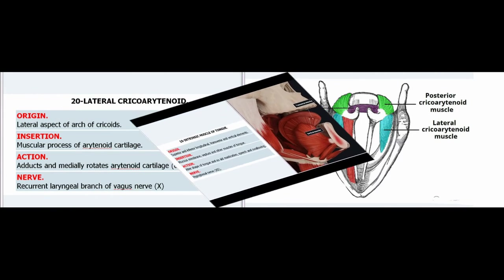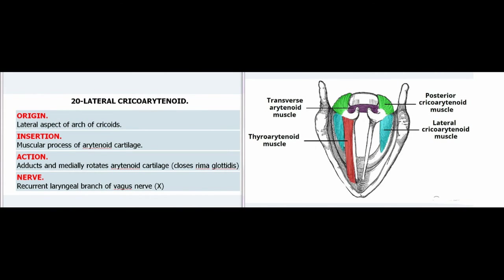20. Lateral Cricoarytenoid. Origin: Lateral aspect of arch of cricoid cartilage. Insertion: Muscular process of arytenoid cartilage. Action: Adducts and medially rotates arytenoid cartilage, closes rima glottidis. Nerve: Recurrent laryngeal branch of vagus nerve (X).